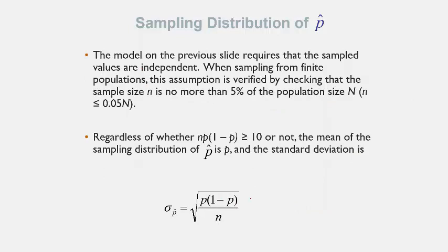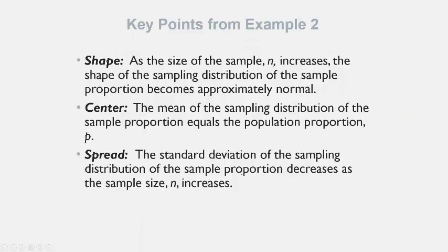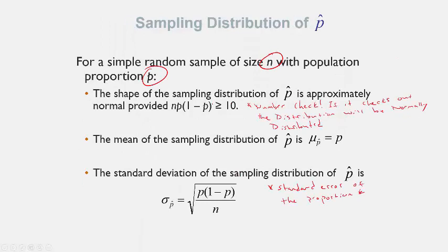This model requires that the sample values are independent. When sampling from a finite population, verify this by checking that sample size n is no more than 5% of the population size. Regardless of whether n times P times (1 minus P) is greater than or equal to 10, the mean of the sampling distribution of p-hat is still P and the standard deviation is still the square root of P times (1 minus P) over n. As long as the number check passes, the sampling distribution of p-hat will be normal.